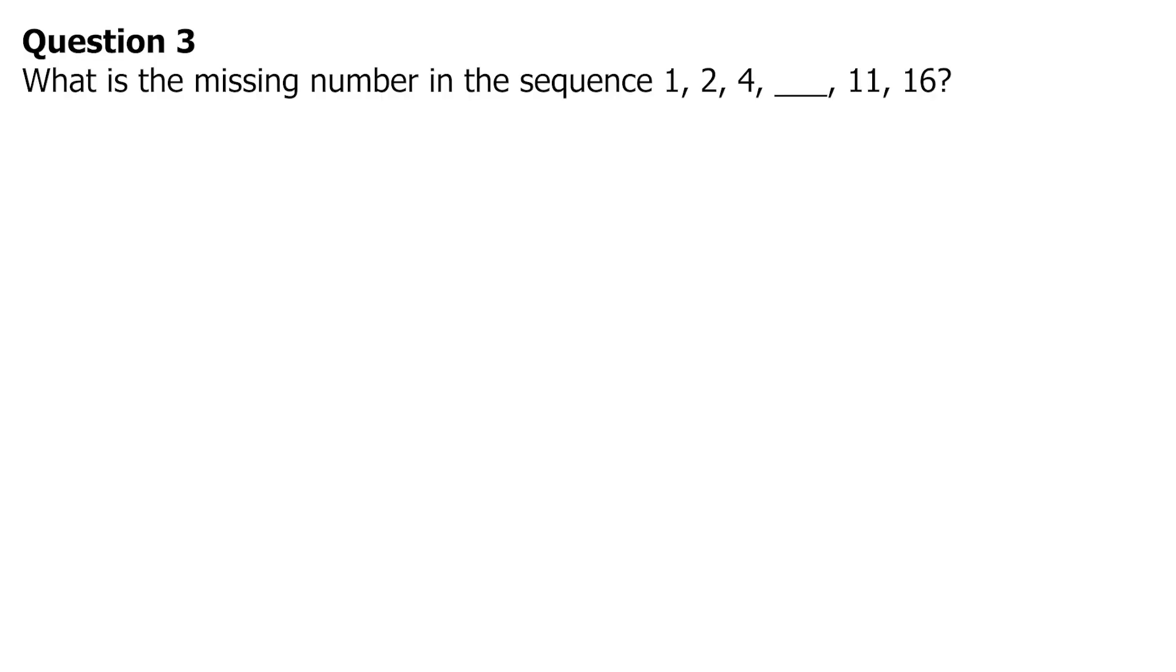Question 3: What is the missing number in the sequence 1, 2, 4, blank, 11, 16? First is to establish a theory. The given sequence follows the pattern of adding increasing consecutive numbers to the previous term. The sequence goes by: 1 plus 1 equals 2, 2 plus 2 equals 4, and 4 plus 3 equals 7, wherein 7 is the missing number in the sequence.